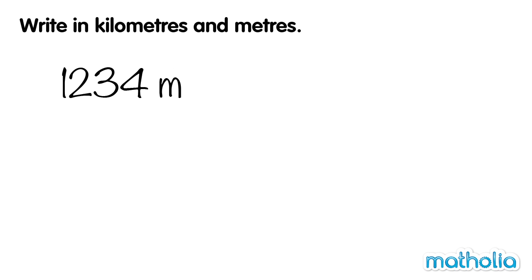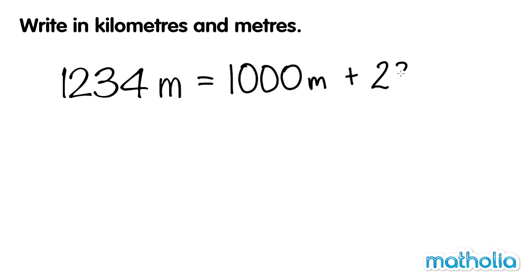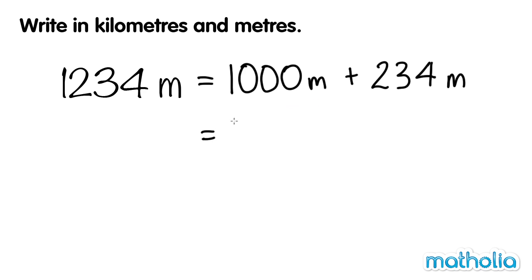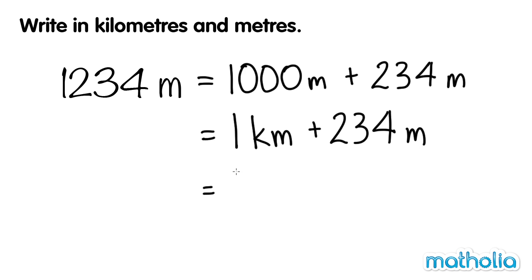1000 metres is equal to 1 kilometre. We can write 1234 metres as 1000 metres plus 234 metres. 1000 metres is equal to 1 kilometre. So, we can write 1234 metres equals 1 kilometre 234 metres.